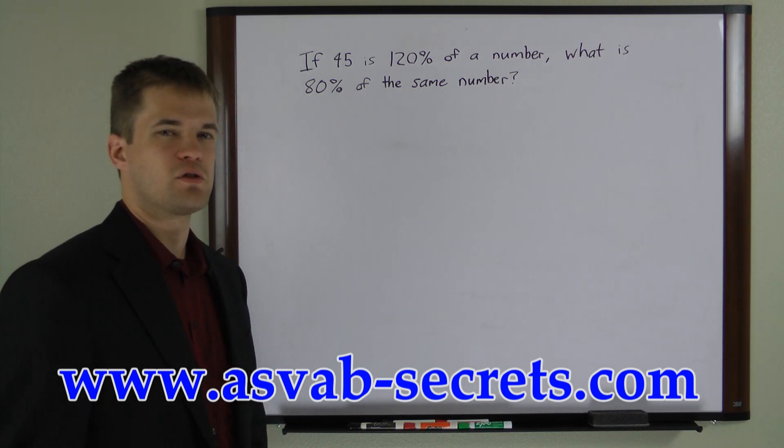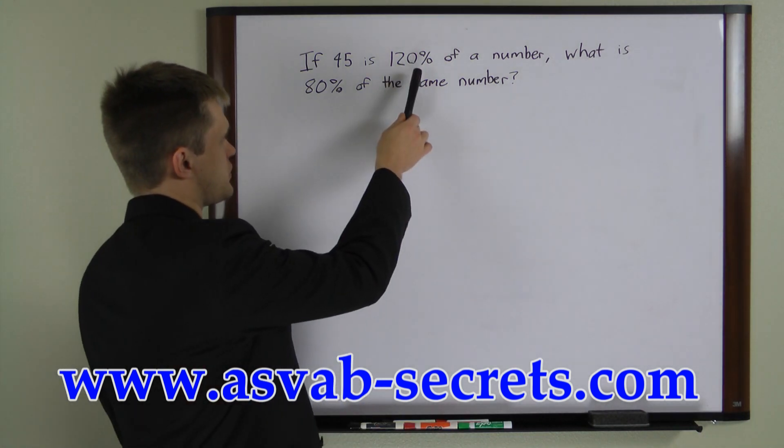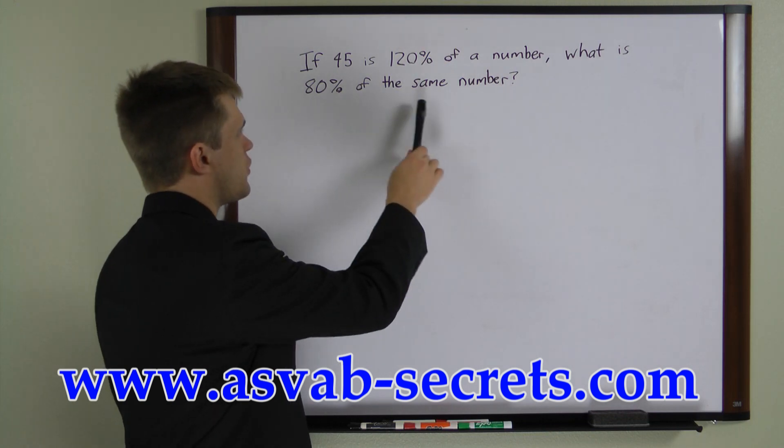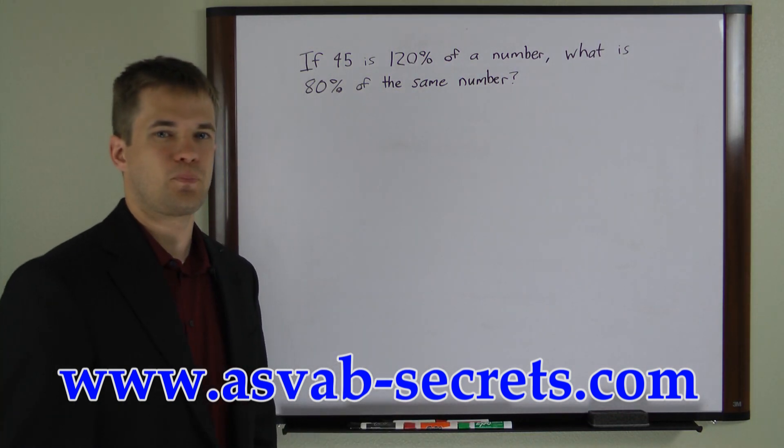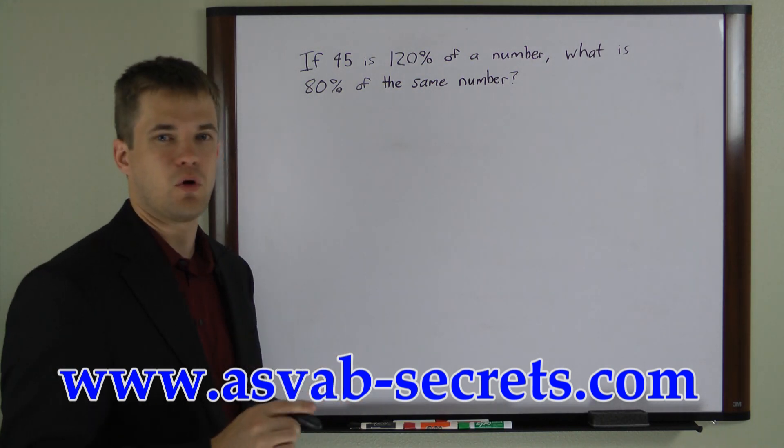Now what we have here is a two-step percentage multiplication problem. First we have to work backwards with 120%, and then we work forwards with the other percent. This problem gives us two equations that we can solve to find the number we're looking for.